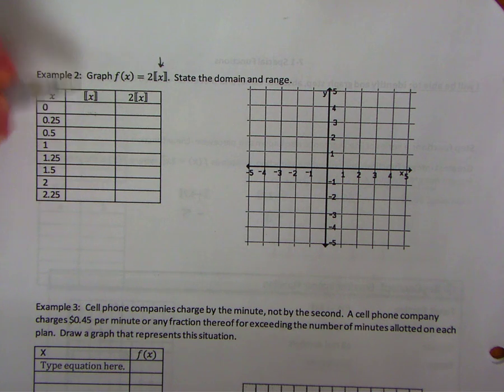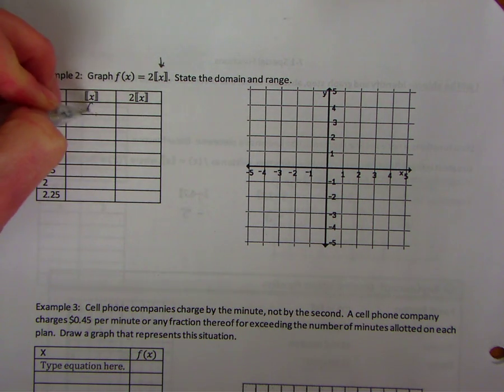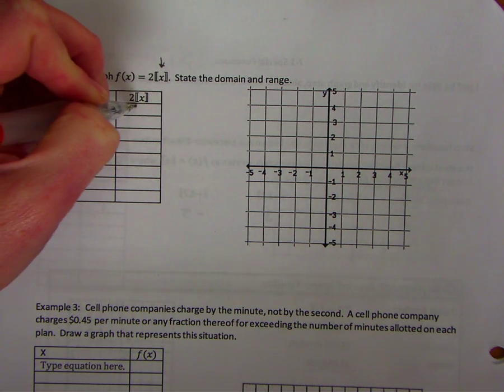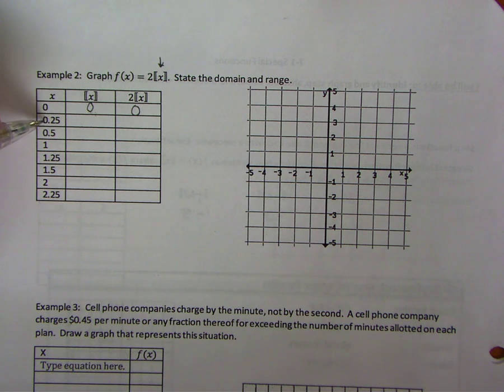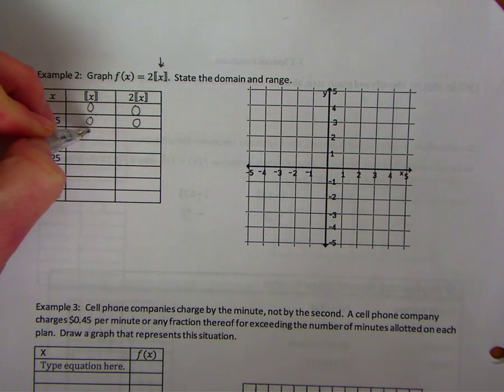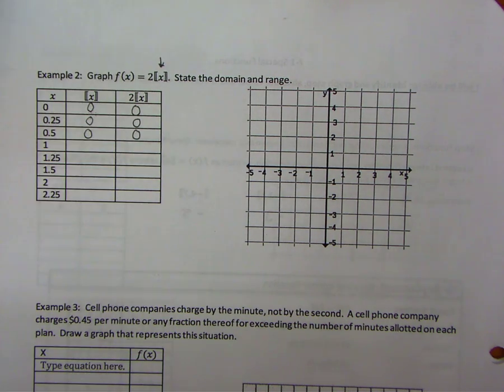The greatest integer not greater than 0 is going to be 0. 0 times 2 is still 0. 0.25 would round to 0 times 2 is still 0. 0.5 would round down to 0 times 2 is still 0.